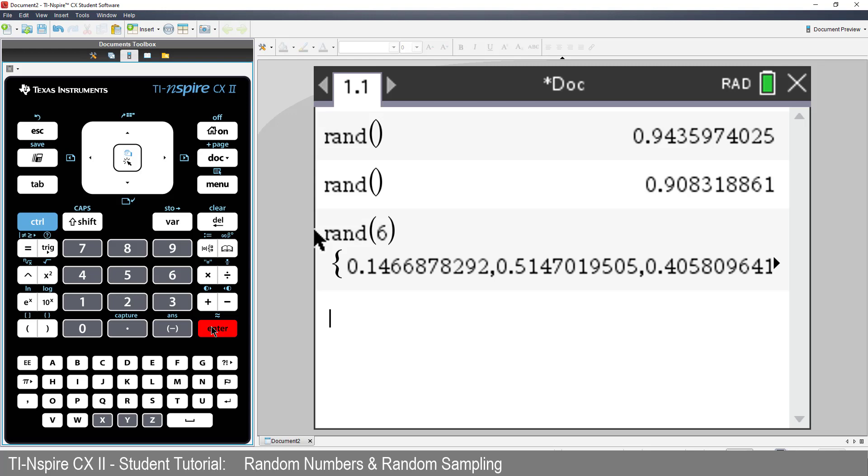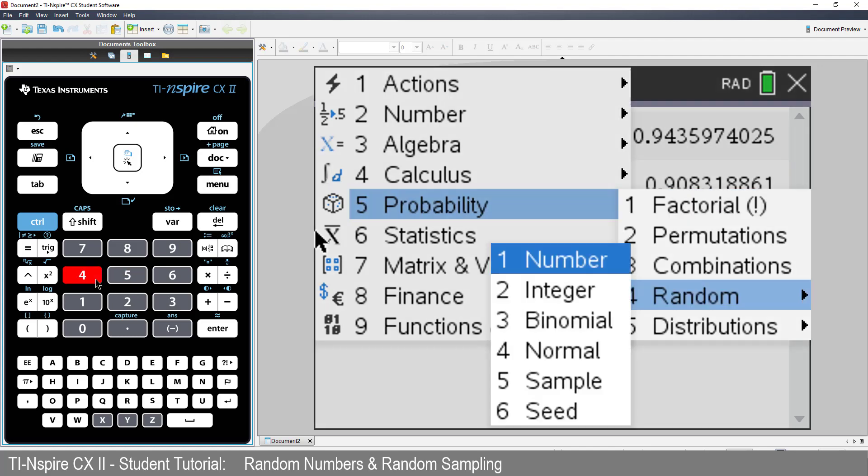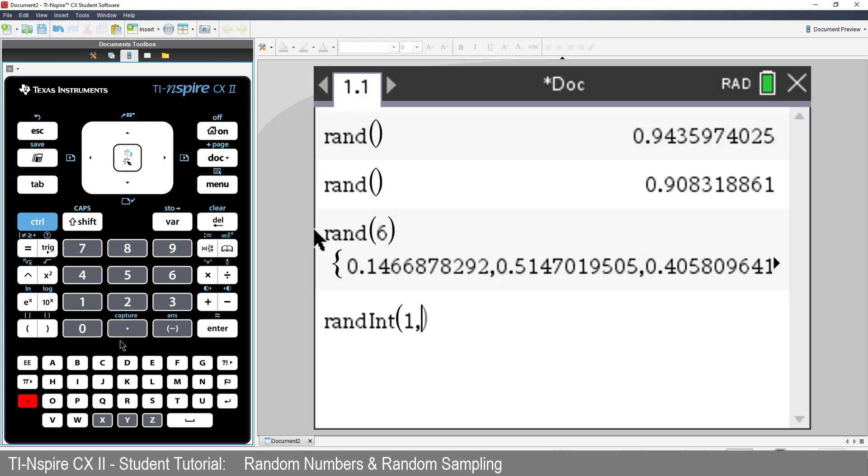Suppose you want to simulate the rolling of some dice. Let's have a look at the second item in the random menu, Integer. A regular dice contains an even distribution of the numbers 1 through 6, so I'll enter 1, 6, and press enter.